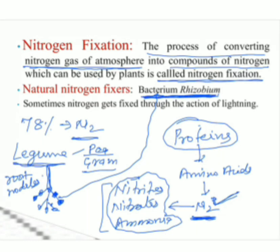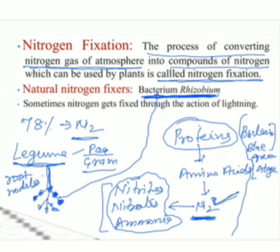Rhizobium bacteria is present only in legume plants. For other plants, there are some bacteria and blue-green algae present in soil. These organisms also convert atmospheric nitrogen into nitrites, nitrates, and ammonia. So in legume plants it is Rhizobium, and in other plants the bacteria present in soil convert atmospheric nitrogen into these compounds, which plants absorb through their roots. In this way nitrogen comes into the body of plants and they synthesize proteins.